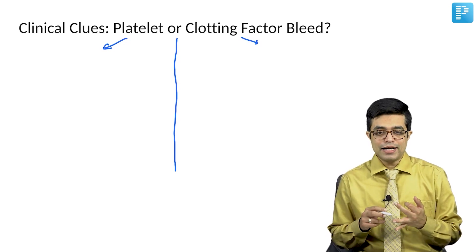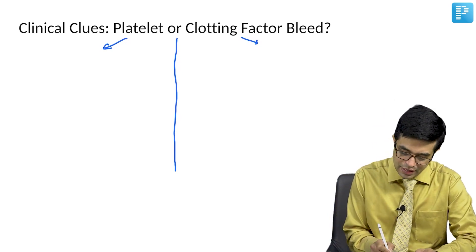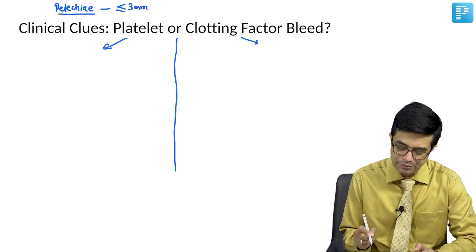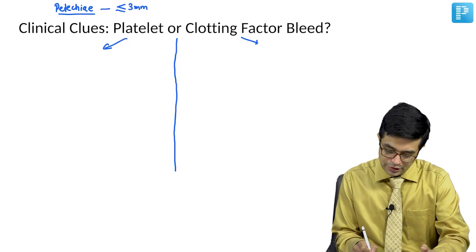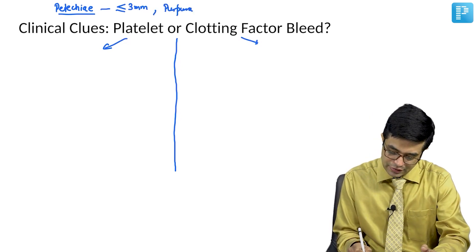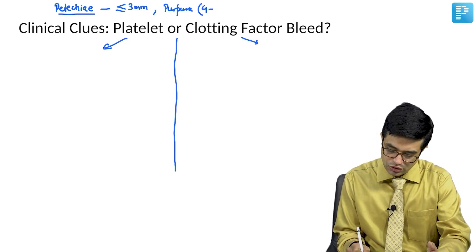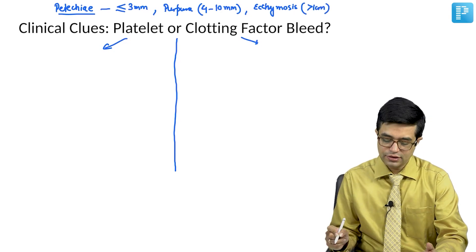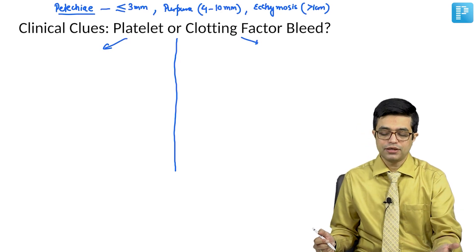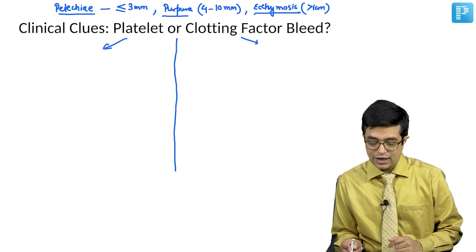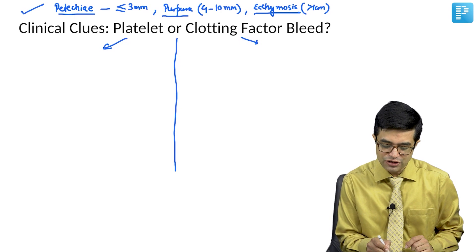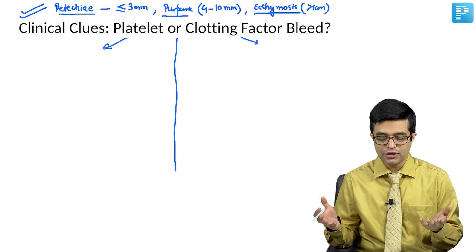The American Academy of Pediatrics and the American Academy of Dermatology both say that petechiae are skin lesions equal to or less than 3 millimeters in diameter — so petechiae will be 1 to 3 millimeters. Purpura are lesions between 4 to 10 millimeters (1 centimeter) in size — some books say 3, some say 4. Ecchymosis are lesions greater than 1 centimeter. This is the value mentioned in many publications of the American Academy of Dermatology and is the one we are supposed to remember. RCH guidelines and Indian dermatology textbooks use slightly different values.